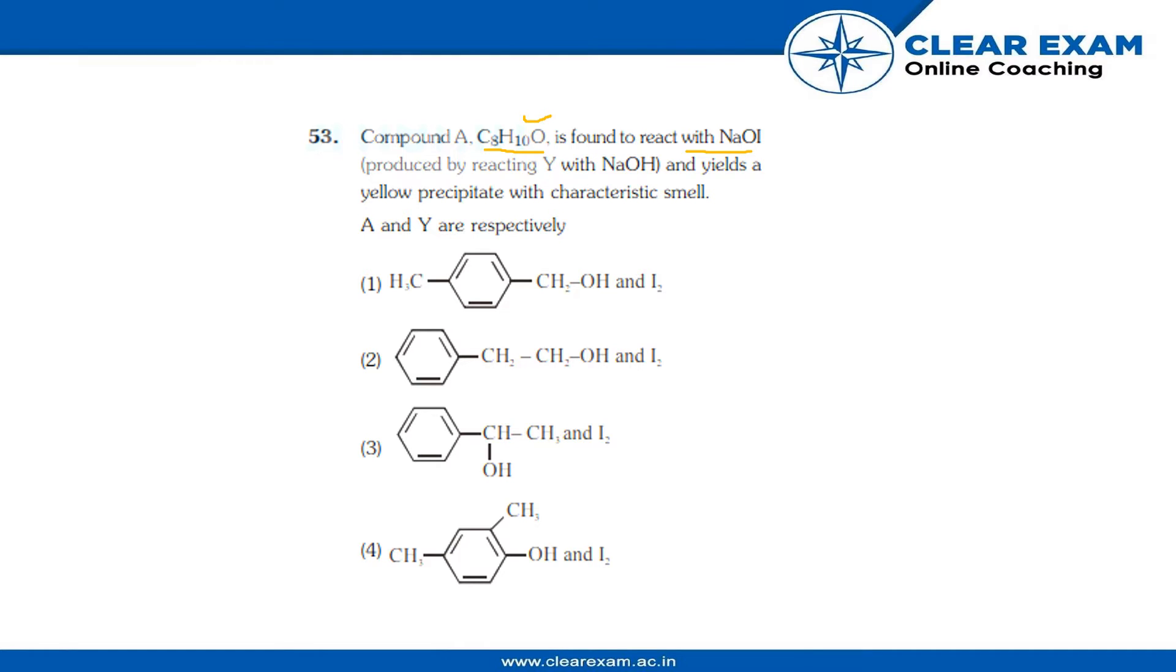C8H10O is found to react with NaOI, and this NaOI is produced by reacting Y with NaOH. Y was first reacted with NaOH, then NaOI was formed, and then it was combined with C8H10O.